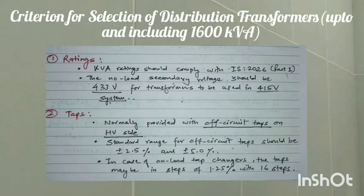Second, taps or tapping. Transformers are normally provided with off-circuit taps on the HV side. The standard range of off-circuit taps should be plus or minus 2.5 percent and 5 percent. In case of on-load tap changers, the tap may be in steps of 1.25 percent with 16 steps.